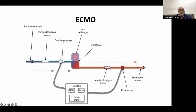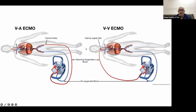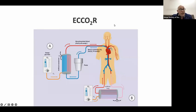For ECMO: a cannula is placed in the patient to draw venous blood, which is then centrifuged, exposed to a heat exchanger and oxygenator until oxygenated, and reinfused back to the patient. It can be veno-arterial — using the femoral artery — or veno-venous, where the venous cannula can be placed in the femoral or jugular vein. Extracorporeal carbon dioxide removal is developed for patients with hypercapnic respiratory failure (type 2), especially COPD patients with CO2 narcosis due to CO2 retention blocking the respiratory drive center.